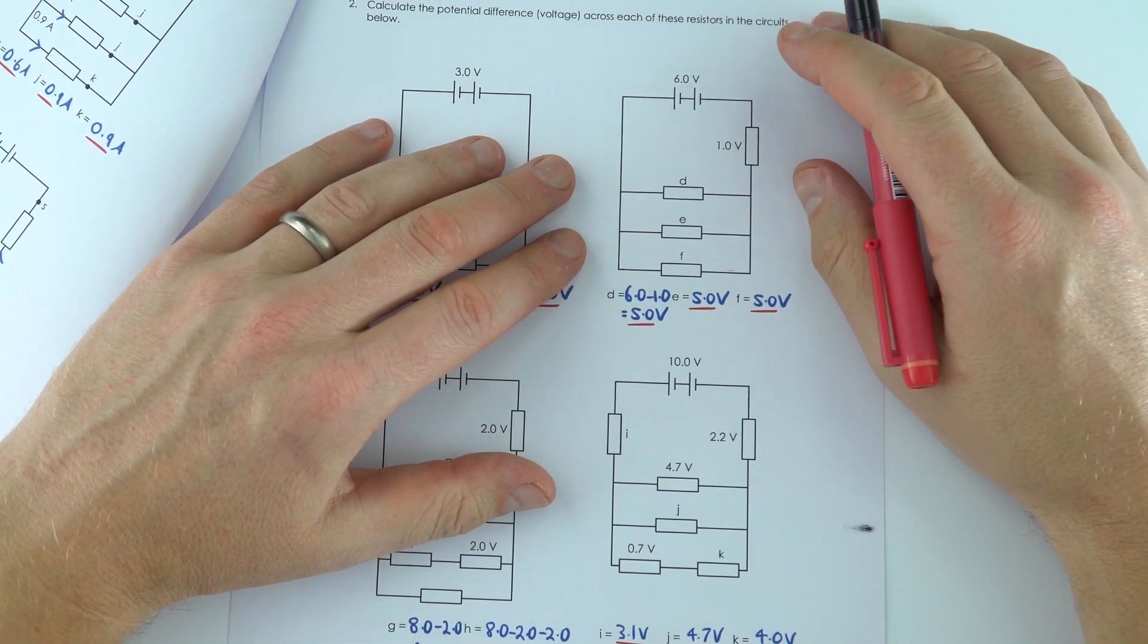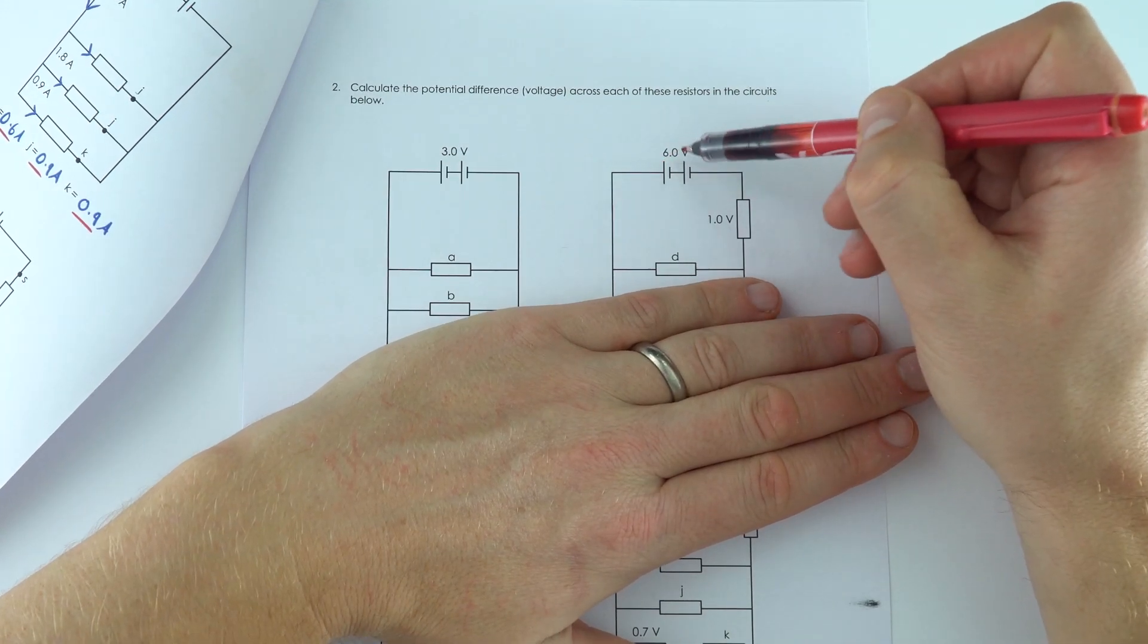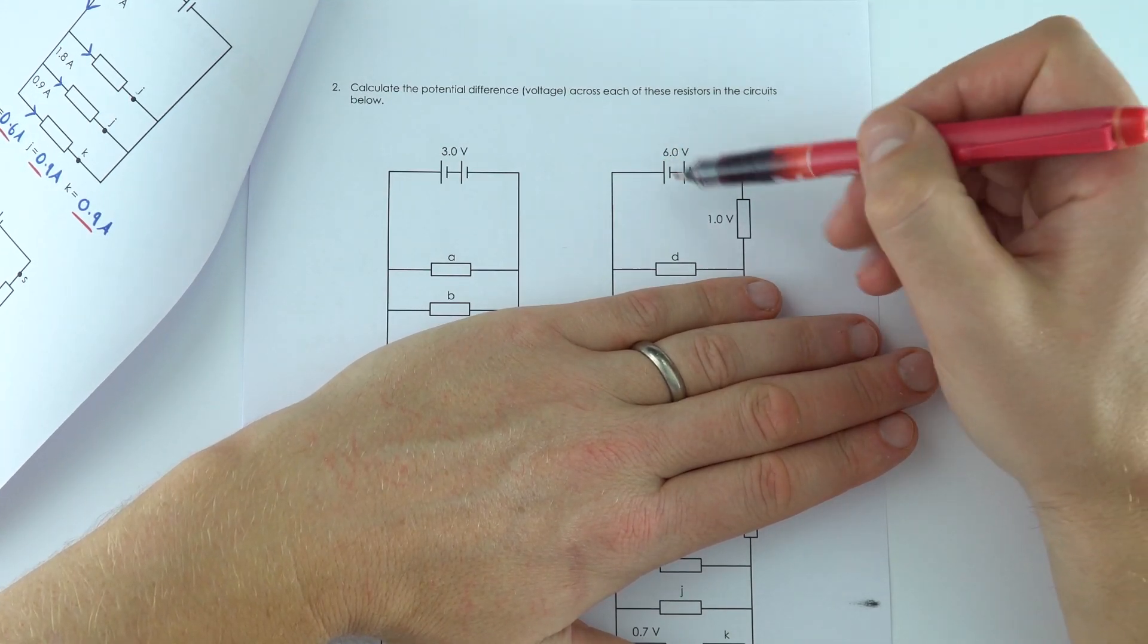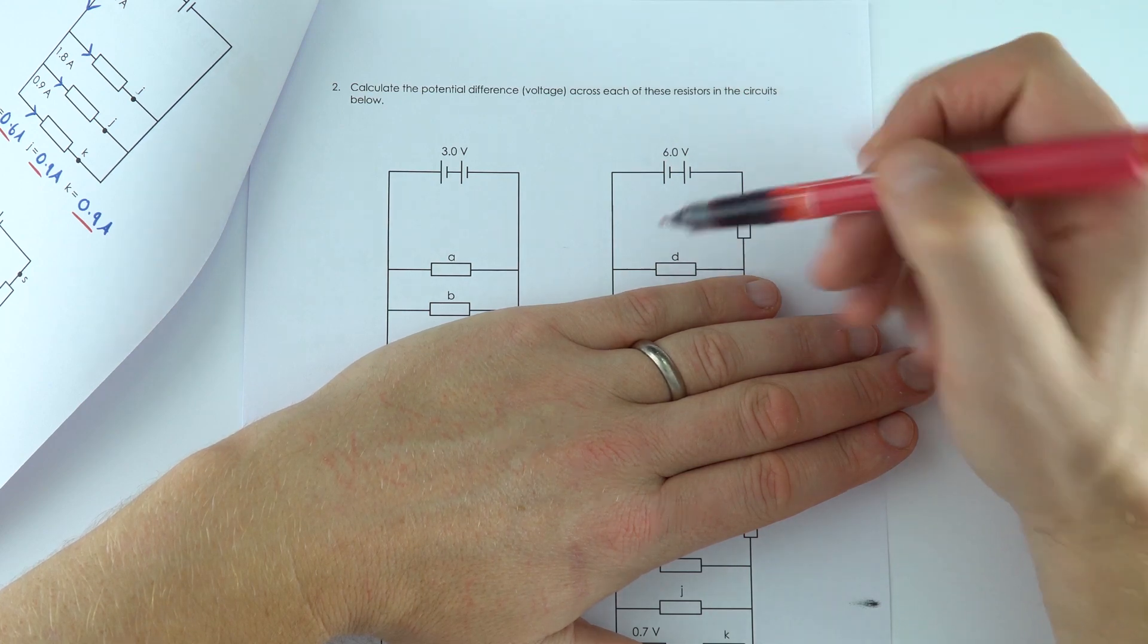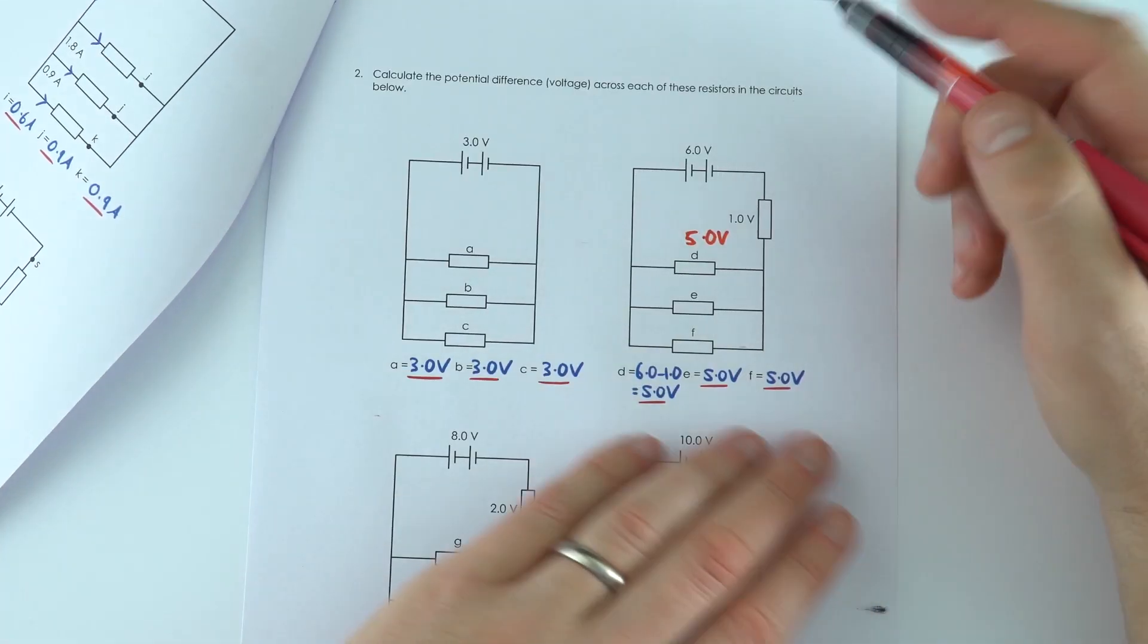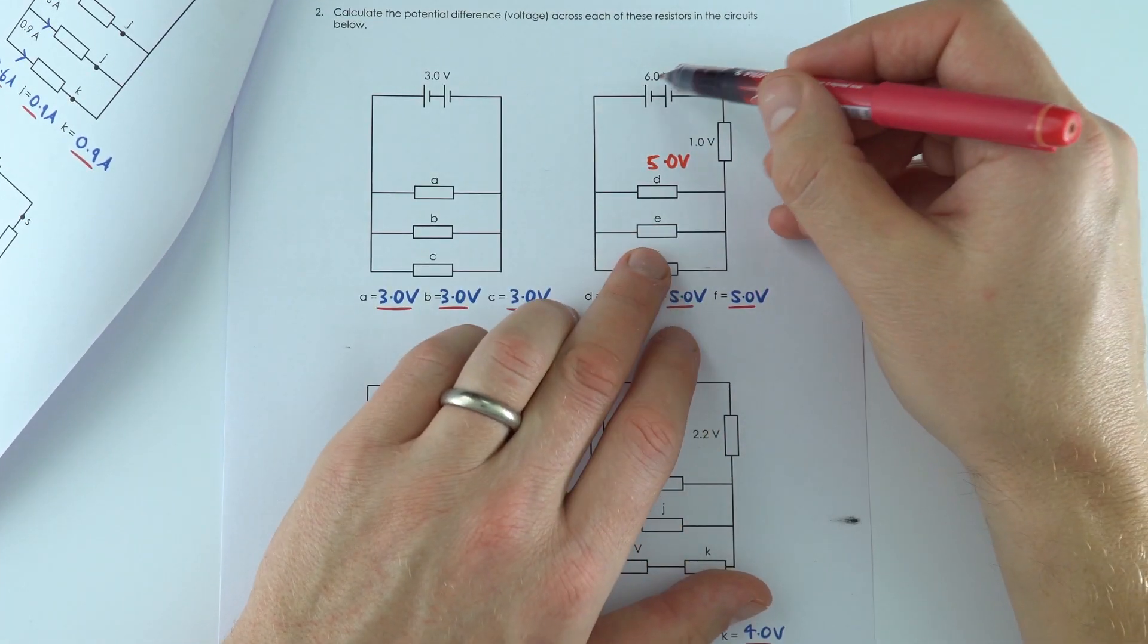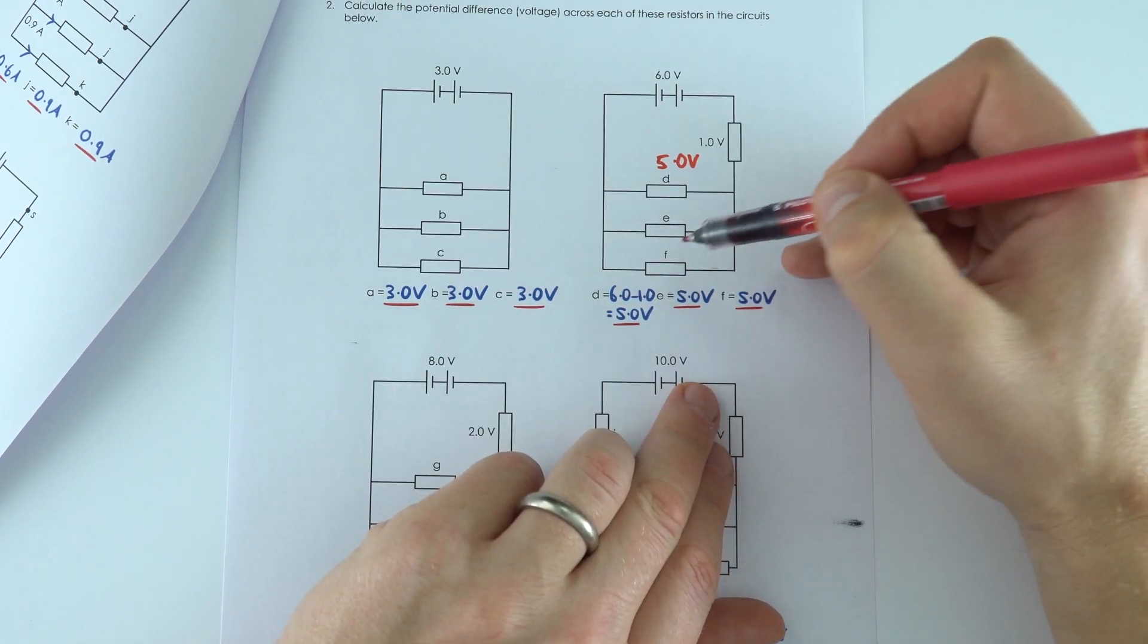For this one over here, the way I thought about it initially was thinking, let's look at the top loop. We've got six volts from the battery or the two cells. One volt is going across that resistor, that leaves five volts across component D. And we could have done the same by thinking, well you've got six volts here, one volt there, so that leaves five across E and also five across F.